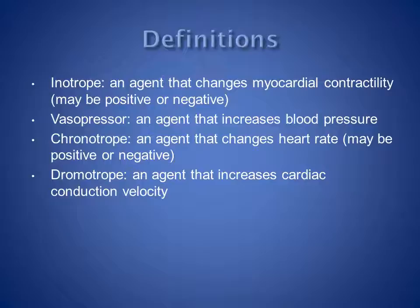A chronotrope is an agent that changes heart rate — again, this may be positively or negatively. And a dromotrope is an agent that increases cardiac conduction velocity.